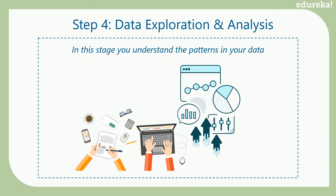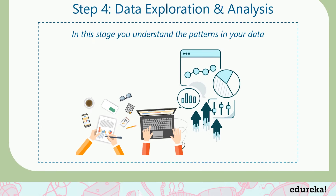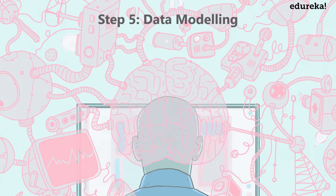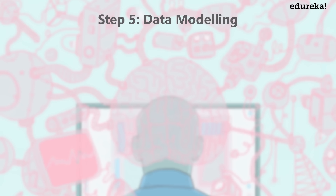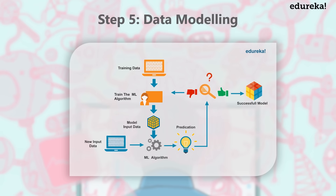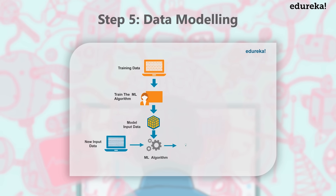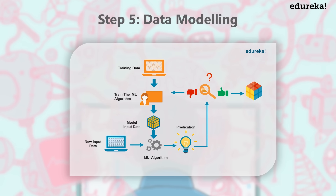Data cleaning is followed by data exploration and analysis. The data exploration stage is like the brainstorming of data analysis — this is where you understand the patterns in your data. This is followed by data modeling, which involves building a machine learning model that predicts the Uber surge price at a given time and location. This model is built using all the insights and trends collected in the exploration stage, and it is trained by feeding it thousands of customer records so that it can learn to predict outcomes more precisely.